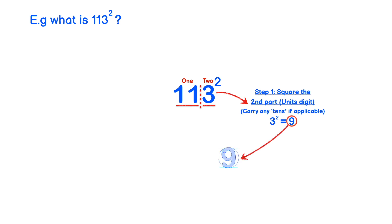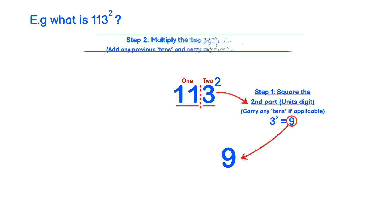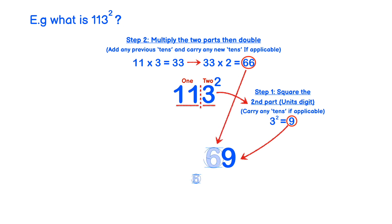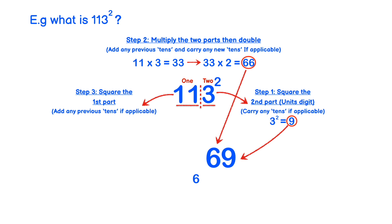So 3 squared equals 9 and we put that in the answer line. Since there are no tens, we don't need to carry anything. For step 2, we multiply the two sections together and then we double. In this case section 1 is 11 and section 2 is 3. So 11 times 3 equals 33. Doubling that gives us 66. So we put 6 in the answer line and we carry the other 6. Then step 3, we square the first part or the first section of the number — in this case it's 11 squared.